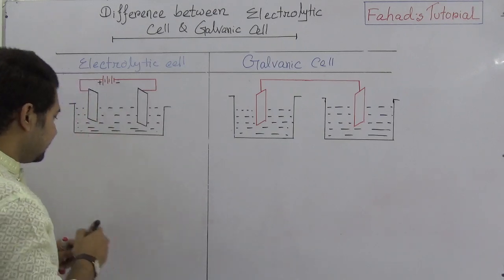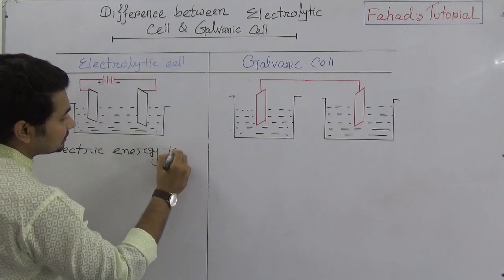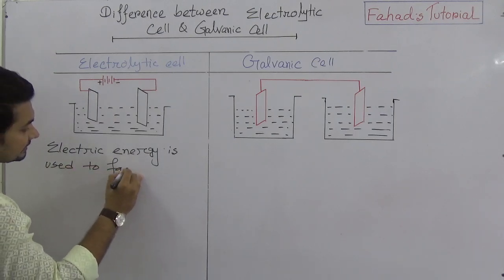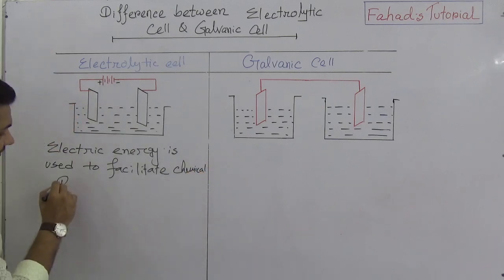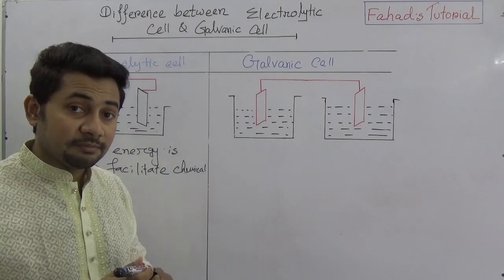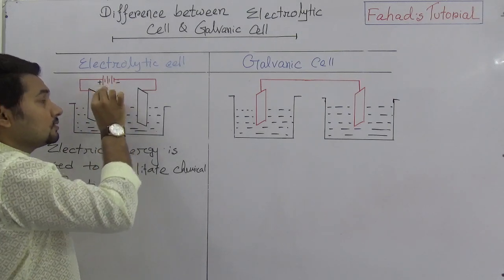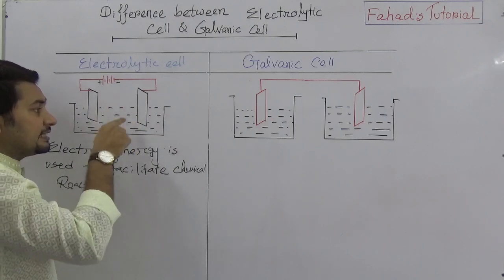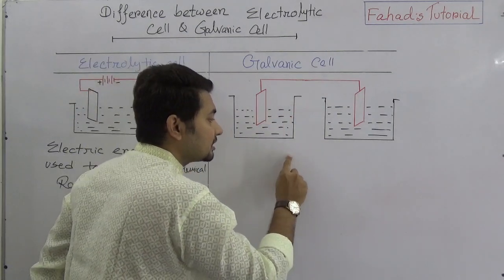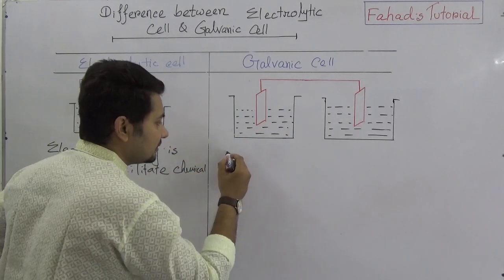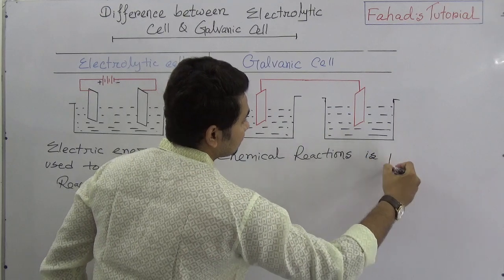So the basic difference is that electric energy is used to facilitate chemical reactions inside the electrolytic cell. In the galvanic cell, on the other hand, chemical reactions produce the electricity. So we can say that in the electrolytic cell, electric energy is used to drive reactions, whereas in the galvanic cell, chemical reactions are producing the electricity.